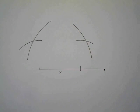And the places where those arcs cross are the places where the other two vertices of the trapezoid have to be.